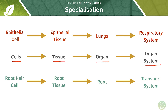In the same way, let's look at the transport system in plants. We have our transport system — the organ is the root, the tissue is the root tissue, and the tissue itself is formed of many cells. The functional property of them is that they are root hair cells. If you just memorise that it goes from cells, which make up tissues, which make up organs, which make up organ systems, you can then work backwards from any system, whether it be in an animal or a plant.